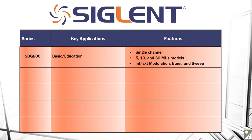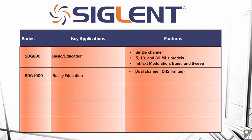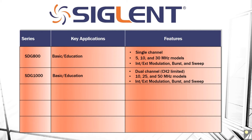Now we move up to the SDG1000 series. This is more for basic applications requiring a standard waveform or standard function, but in this case we have a dual channel. Channel 2 is limited — it's not going to have the same output capabilities, especially voltage output capabilities, as channel 1. But if you do have limited functionality requirements, you can use this as a dual channel instrument. It's available in 10, 25, and 50 MHz models, and it has internal and external modulation, burst, and sweep capability.